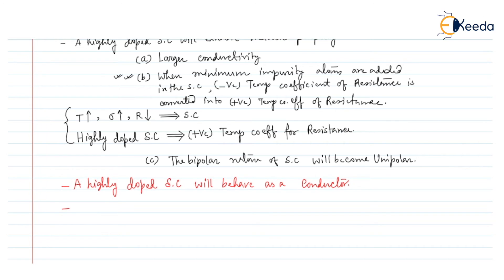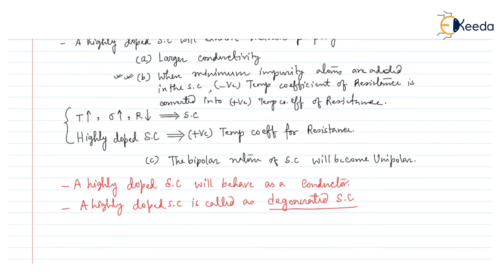A highly doped semiconductor is called a degenerate semiconductor, where the doping concentration, or impurity ratio, of a degenerate semiconductor is 1 to 10 to some power. These are the two properties we can observe.